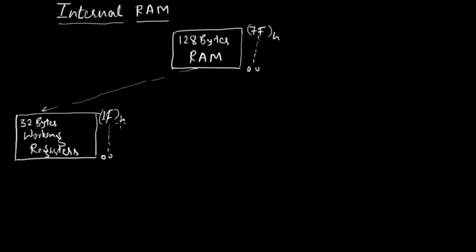These 32 bytes are again internally divided into four more blocks, and these blocks represent four different register banks of 8 bytes each.